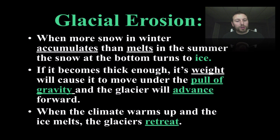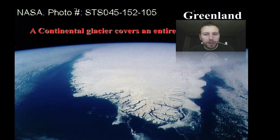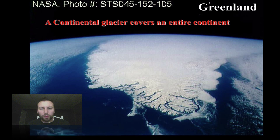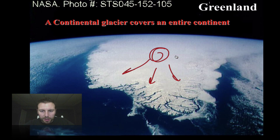When a climate warms up, we won't have that accumulation, and the advancing front will stop advancing and actually begin to retreat during a warming period. Here's a continental glacier — a glacier that formed over a landmass, appearing to be Greenland — where snow accumulates and moves out in all directions.